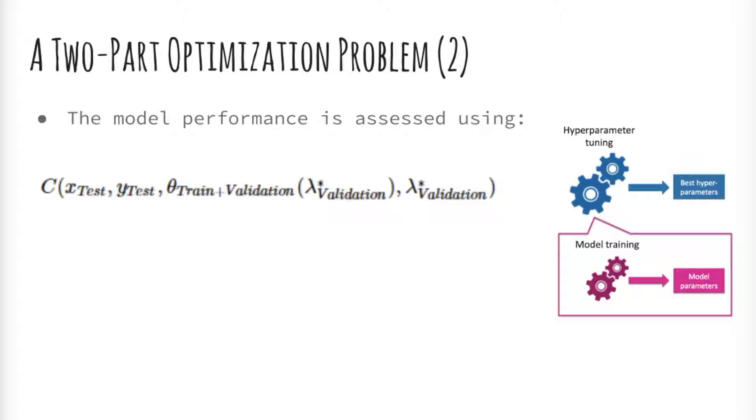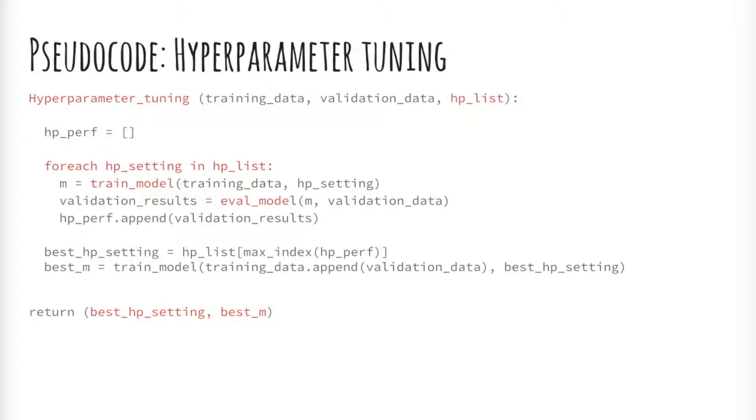For each proposed hyperparameter setting, the inner model training process comes up with a model for the dataset and outputs evaluation results on holdout or cross-validation datasets. After evaluating a number of hyperparameter settings, the hyperparameter tuner outputs the hyperparameter setting that yields the best performing model. The last step is to train and validate a new model on the entire dataset under the best hyperparameter setting. Here is the pseudocode. The training and validation step can be conceptually replaced with a cross-validation step.